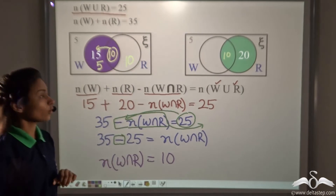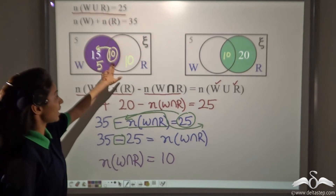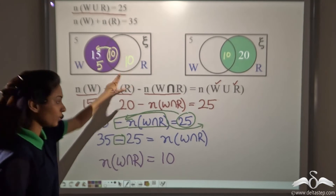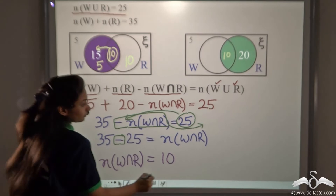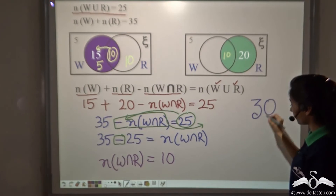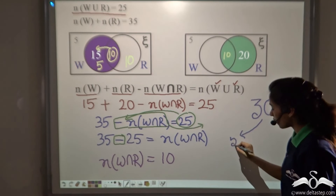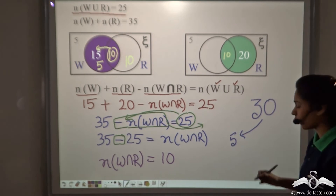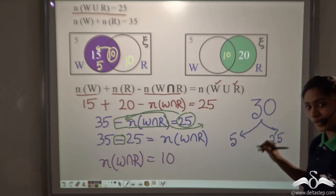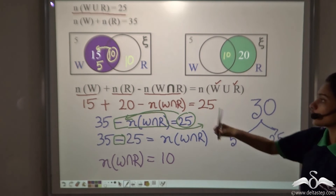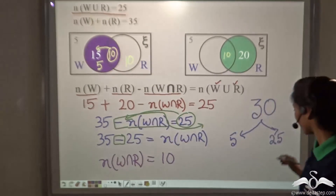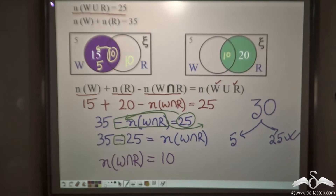So we have 5 days only windy, 10 days both windy and rainy, and 10 days only rainy. That gives us 5 plus 10 plus 10 equals 25 days either windy or rainy or both, plus 5 sunny days equals 30 total days in June. The problem is solved.